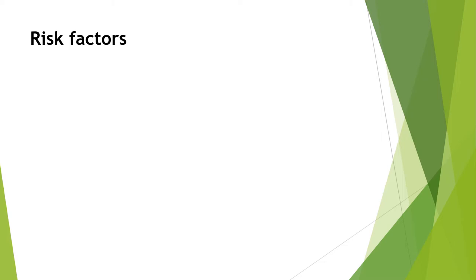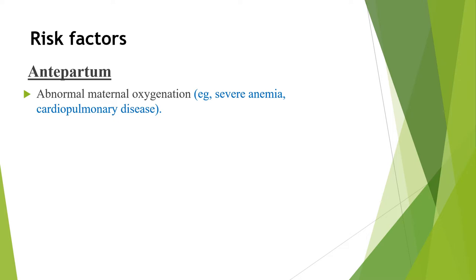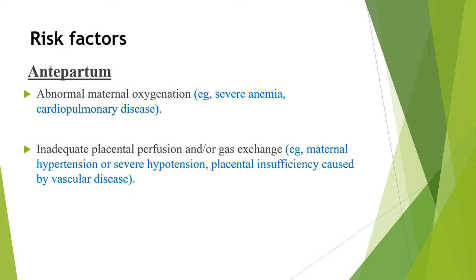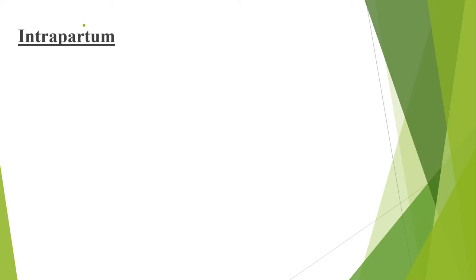When we see risk factors for perinatal asphyxia, we classify them into antepartum, intrapartum, and postpartum. Starting from antepartum: abnormal maternal oxygenation during pregnancy, like presence of severe anemia and cardiopulmonary disease, can predispose for PNA. Inadequate placental perfusion and/or gas exchange — like maternal hypertension, severe hypotension, placental insufficiency caused by vascular disease, congenital infections, or anomaly — can also predispose for antepartum causes of PNA.